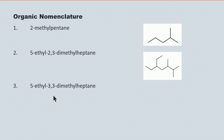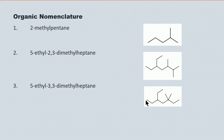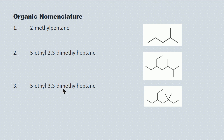5-ethyl-3,3-dimethylheptane — a similar molecule. There's the heptane: one, two, three, four, five, six, seven. And there's our 3,3-dimethyl and our 5-ethyl. You'll notice that ethyl is before methyl in the name because E comes before M in the alphabet, and the same goes for the second molecule above.